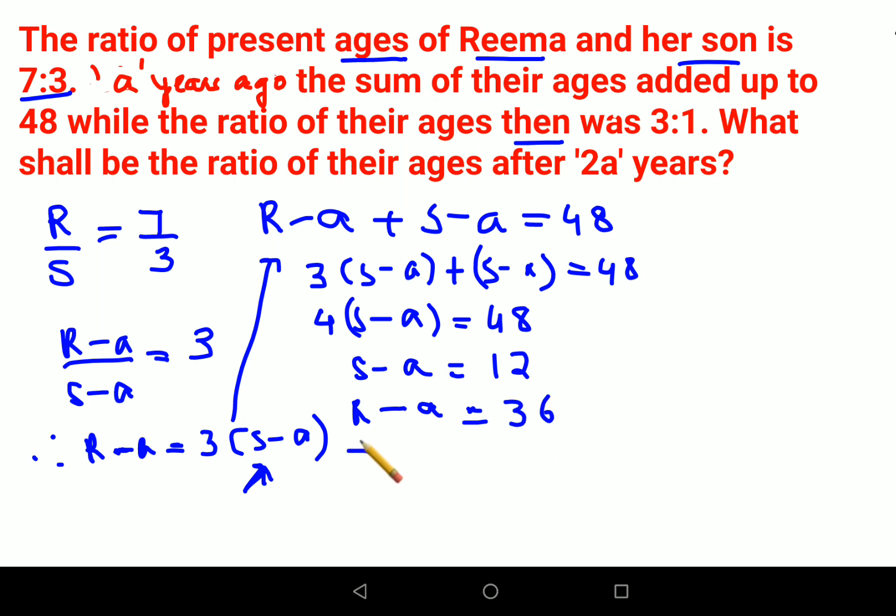So from here, I can say R minus A gets you the value as nothing but 3 into 12 that gets you 36. So now let's subtract them. So what happens in this case is you will have S minus R and this A and minus A gets cancelled because you are subtracting. So this is looking like 12 minus 36 gets you minus 24.